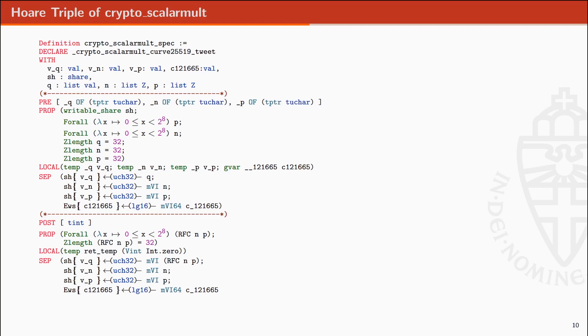We define the following Hoare triple. In the precondition, the inputs N, P, and Q are defined as arrays of 32 bytes and allocated to non-overlapping memory.